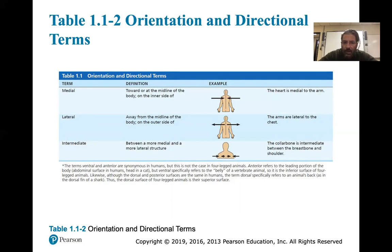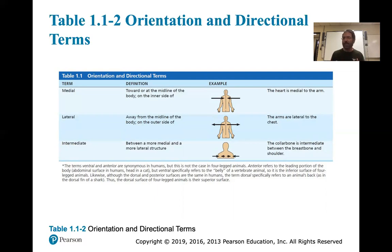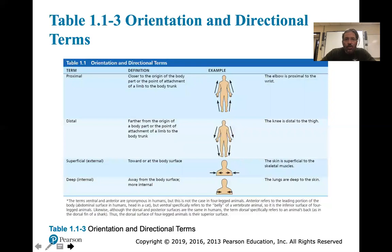Intermediate is between a medial and lateral structure. For example, the lungs are kind of intermediate — they're not completely in the sagittal plane, but not completely lateral like the ribs. The bladder could also be described as intermediate. Some terms are interchangeable and sometimes there's no exact term, so proximal is close to the origin of the body part or the point of attachment of a limb.